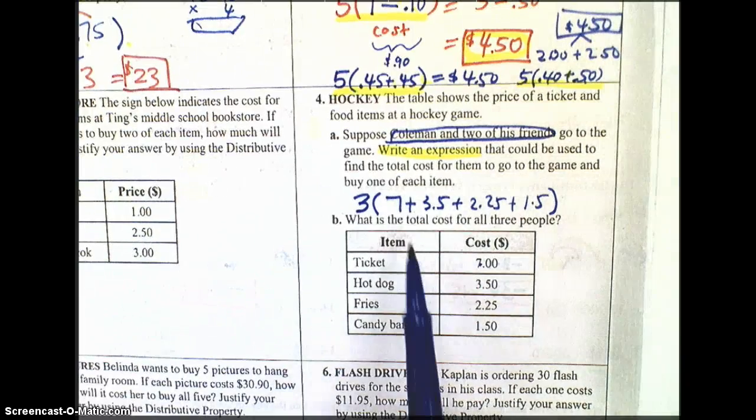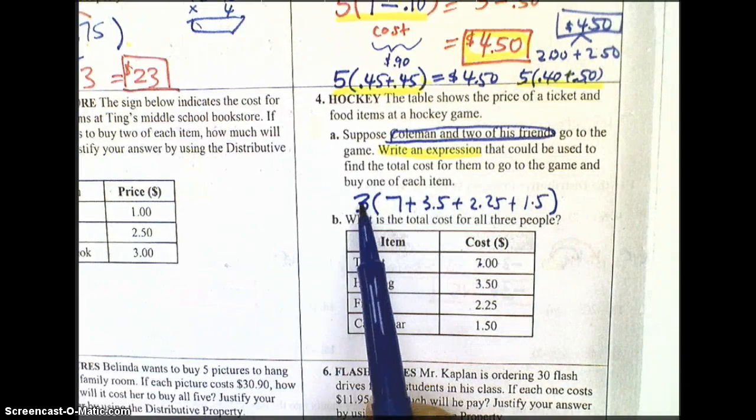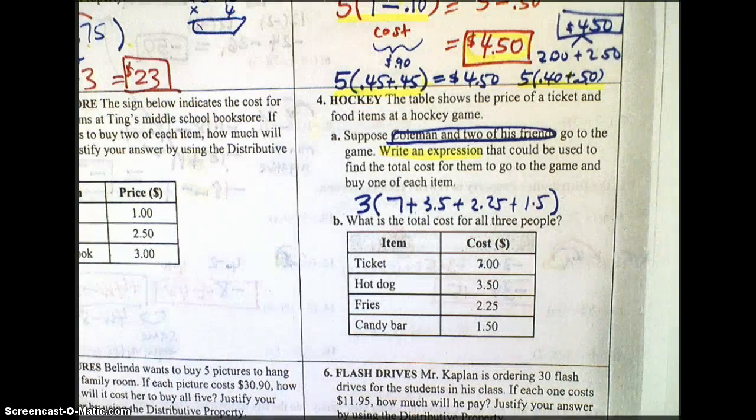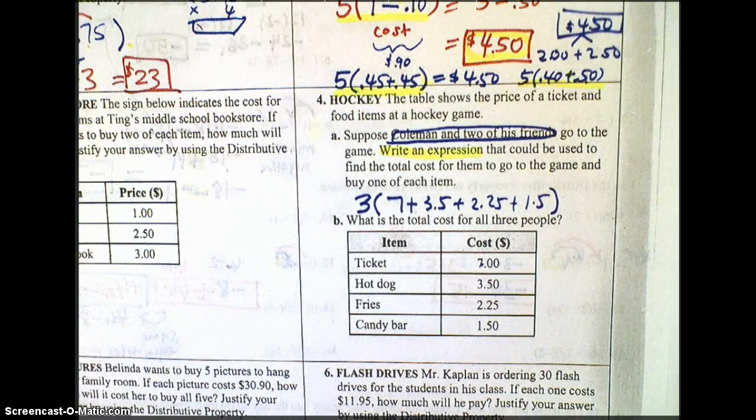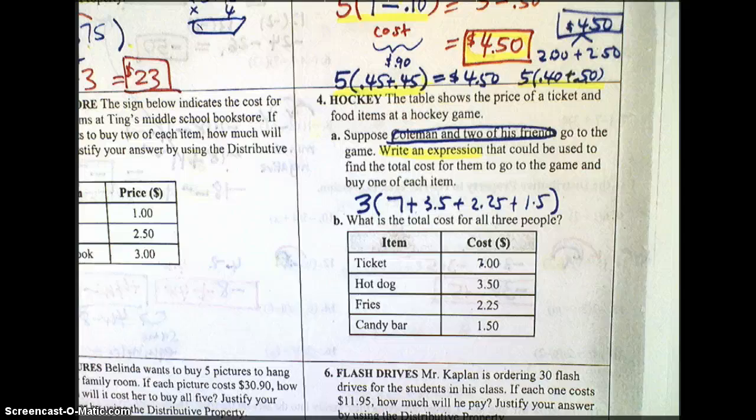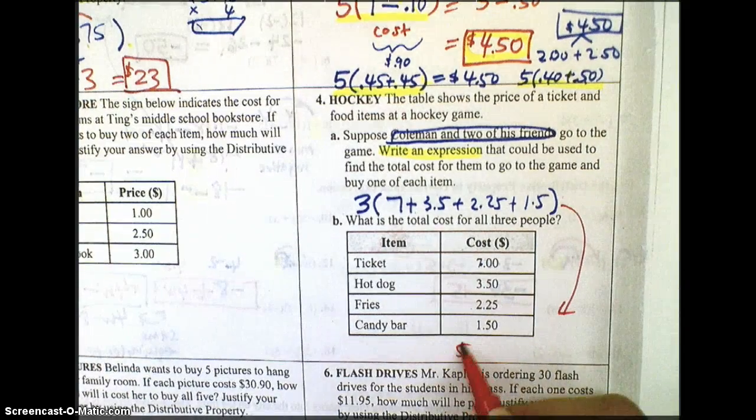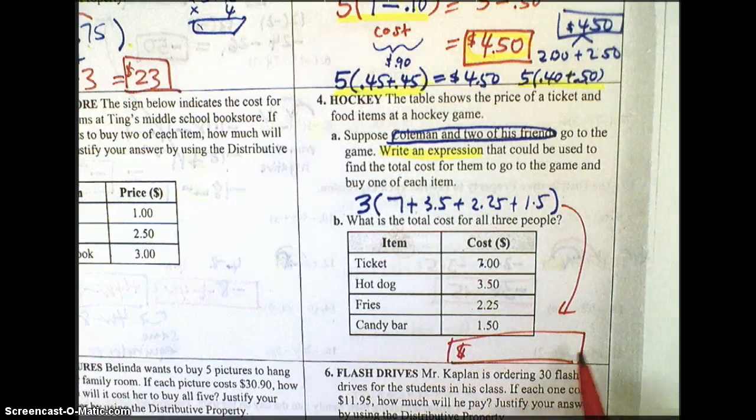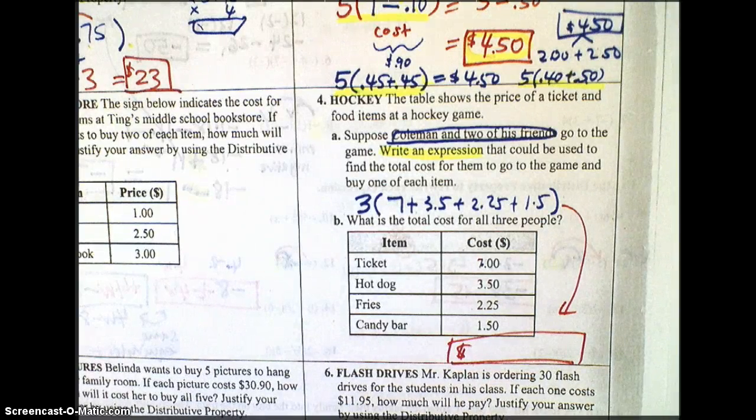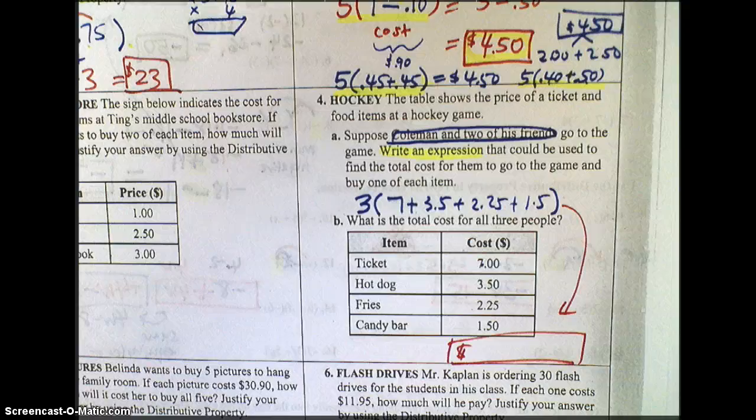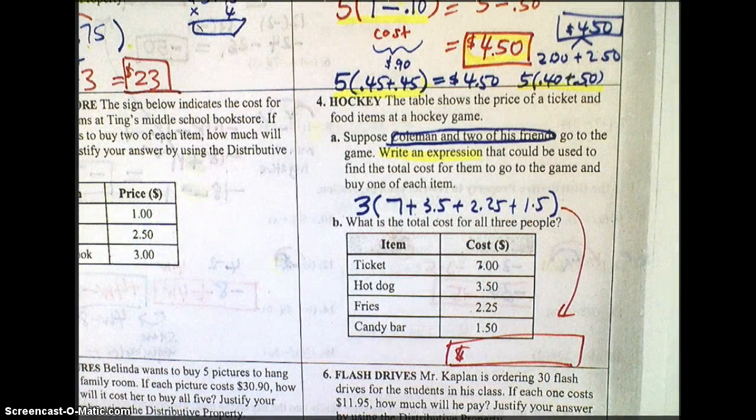So they're each going to have a $7 plus $3.50 plus $2.25 plus $1.50. So that's going to be our expression because if I added all those up, multiplied it by three, then I would be able to find out how much they are paying total. So then in B, you're going to actually solve that question. When you solve it, you'll get an answer that I'm not going to tell you what will go over it in class tomorrow. So don't forget, you have a quiz coming up and study hard. See you tomorrow.